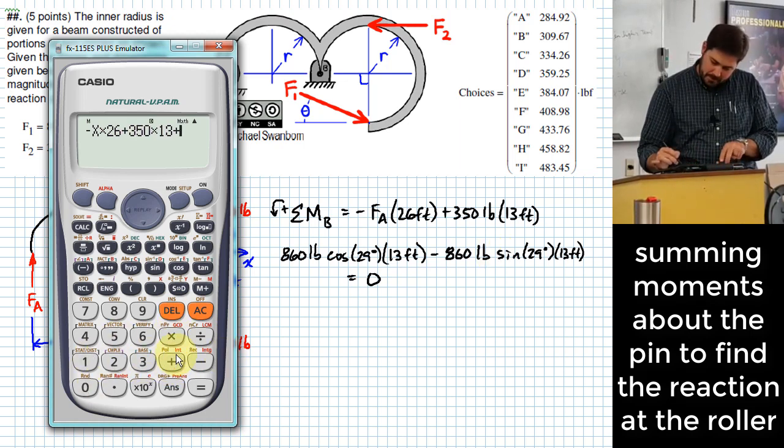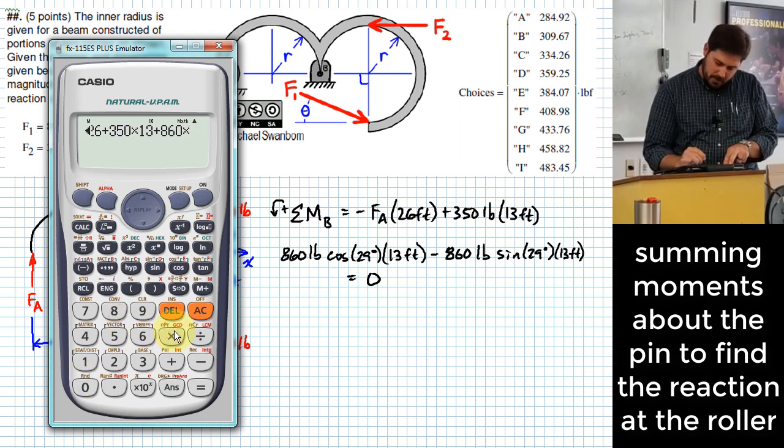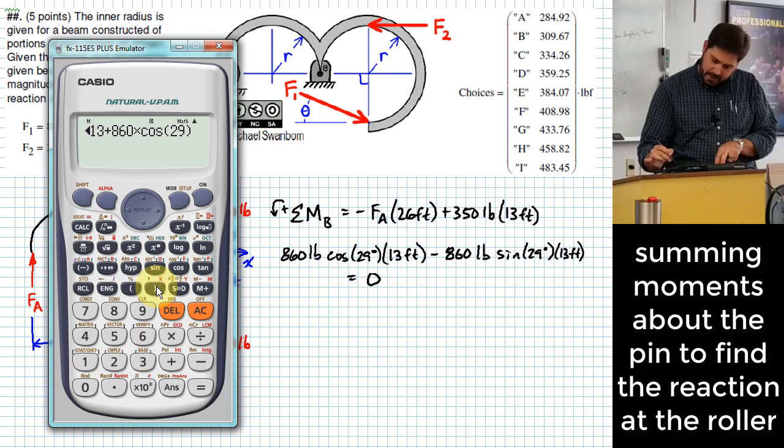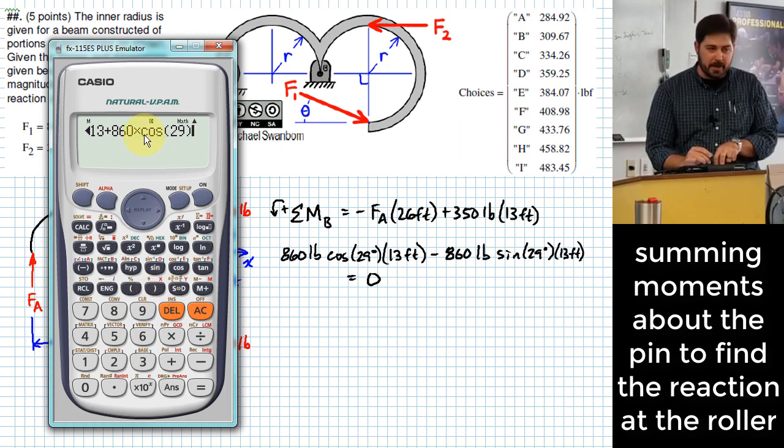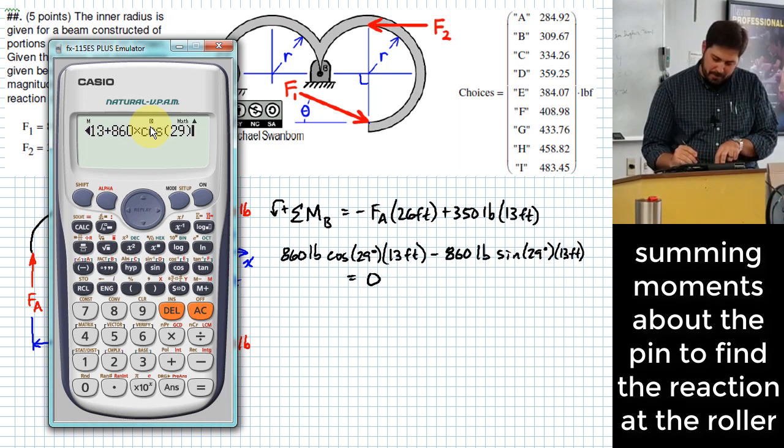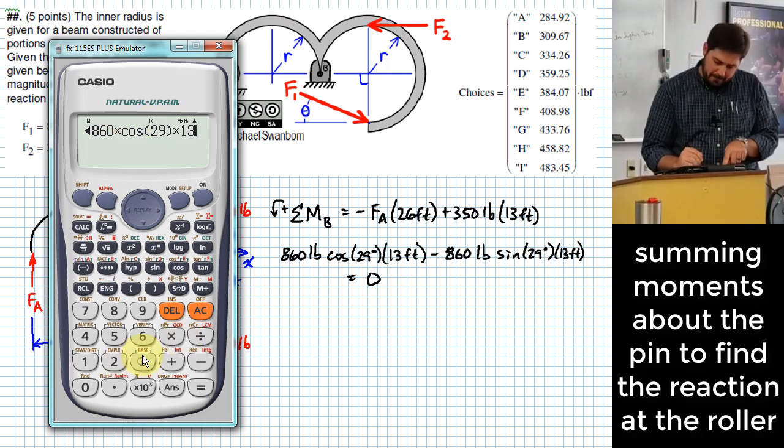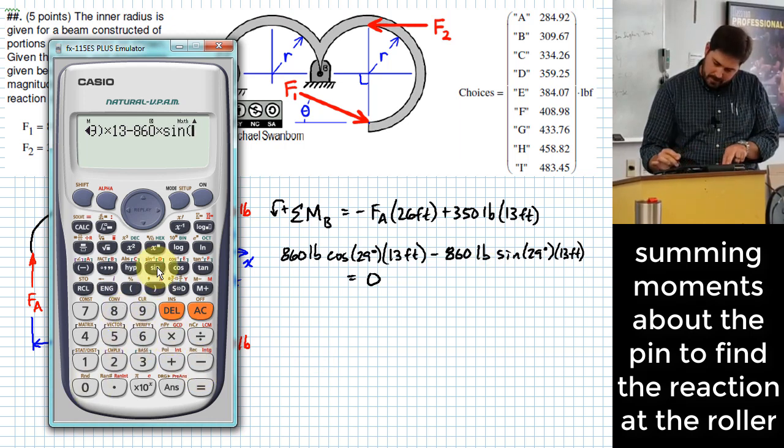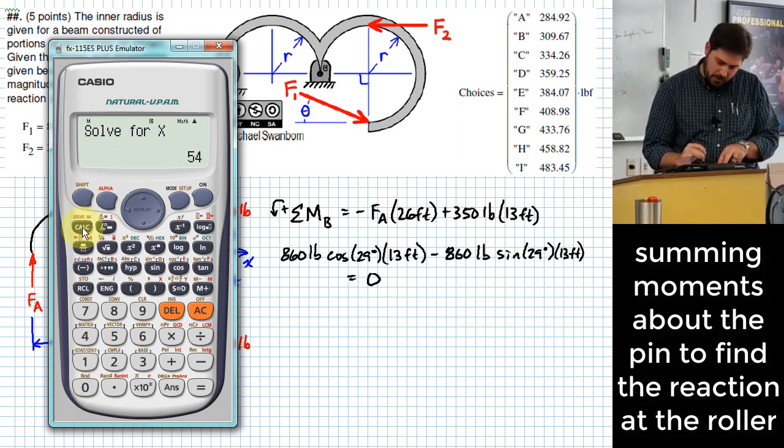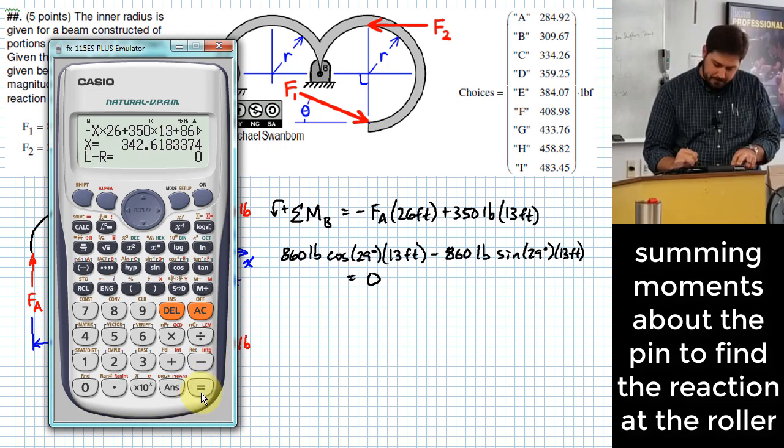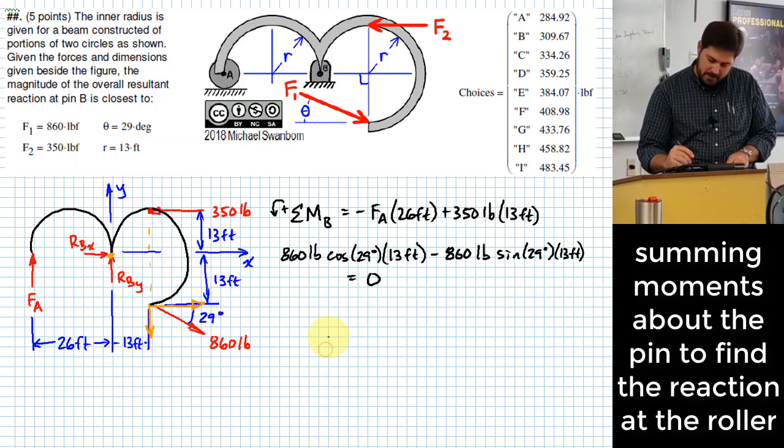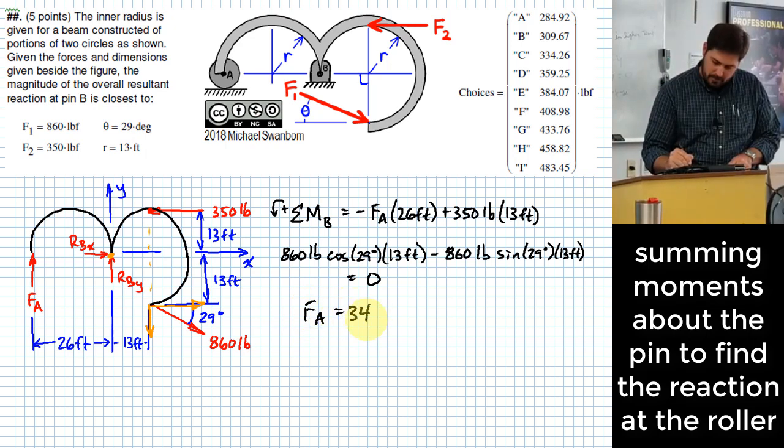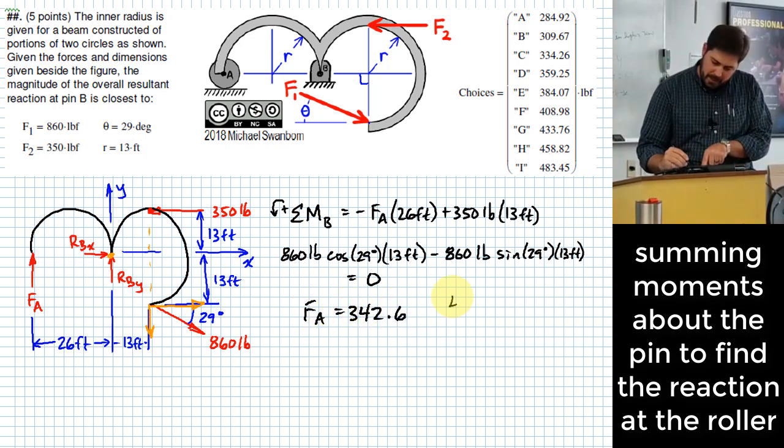So I'll put this in as negative X times 26 plus 350 times 13 plus 860 times cosine of 29. Make sure your calculator is in the right angle mode whenever you're doing these. So I am in degree mode, so I'm good. Times 13 minus 860 times sine of 29 degrees times 13 equals 0. Shift-solve, we're going to solve for the X value there, it comes out to be 342.6, and that will be in pounds.